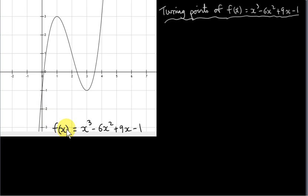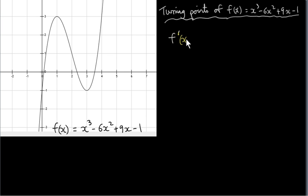I will discuss the values of x for which the cubic function x cubed minus 6x squared plus 9x minus 1 is either increasing or decreasing. What I will do first of all is get the turning points of this function — that is the values of x for which the derivative of the function is equal to 0.